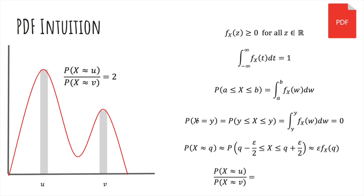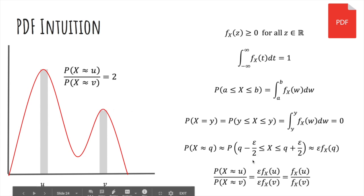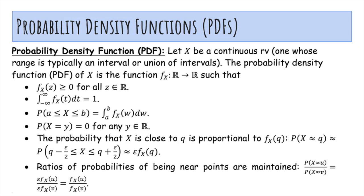Most importantly, the density function tells us the ratio of probabilities. The probability that x is close to u versus close to v is about 2, because this one is twice as high as this one. It becomes epsilon times the density at u over epsilon times the density at v — the epsilons cancel out, so the densities keep the relative probabilities of being near a point. Those are all the properties of a probability density function, for continuous random variables that take on uncountably many values.